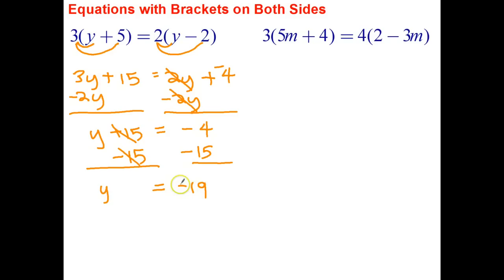Let's just do a quick check to see if that is correct. So negative 19 plus 5 is negative 14. Negative 14 times 3 is negative 42. So the left-hand side evaluates to negative 42. On the right-hand side, negative 19 subtract 2 is negative 21. 2 by negative 21 is also negative 42. So that turns out to be the correct answer.